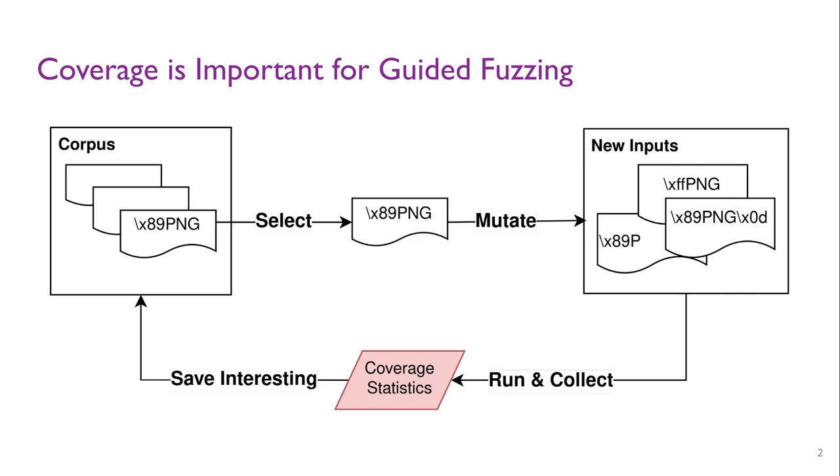Coverage Guided Fuzzing is an automated testing technique that attempts to detect bugs and vulnerabilities in programs. Generally, it contains the following steps. First, the fuzzer selects an input from the corpus. With the chosen input, the fuzzer mutates it to generate many new inputs.